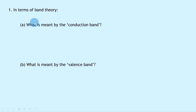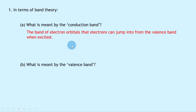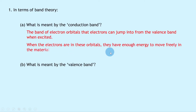Question 1a says: in terms of band theory, what is meant by the conduction band? Well, remember, straight from the notes, this is the band of electron orbitals that electrons can jump into from the valence band when excited. Electrons being excited just means that they are given energy, and when the electrons are in these orbitals they have enough energy to move freely in the material, which is called conduction.